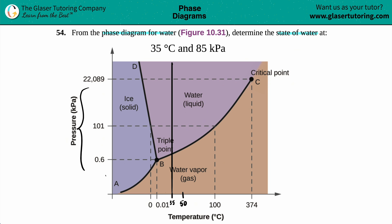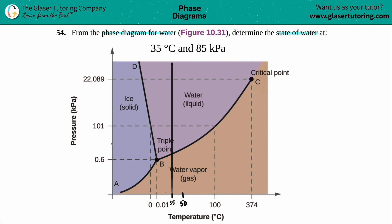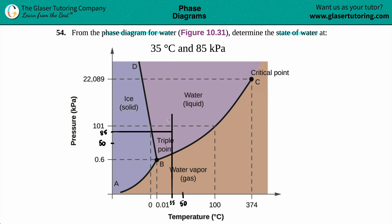Now I'm looking for 85 kilopascals on the pressure axis. It's somewhere between 0.6 and 101. If we treat this as 0 and this as 100, the middle would be roughly 50 kilopascals, so 85 would be a little bit up from there. You don't have to be exact. Let's draw over the line until the two lines meet.